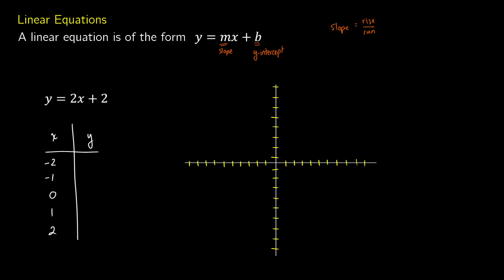To figure out our y values, we simply substitute the number for x into the equation. For the first one with x equals negative 2, we get 2 times negative 2 plus 2, which gives us negative 4 plus 2, which is negative 2. With x equals negative 1, we get 2 times negative 1 plus 2, which is negative 2 plus 2, which gives us 0. For x equals 0, we get 2 times 0 plus 2, which is 0 plus 2, which is 2.